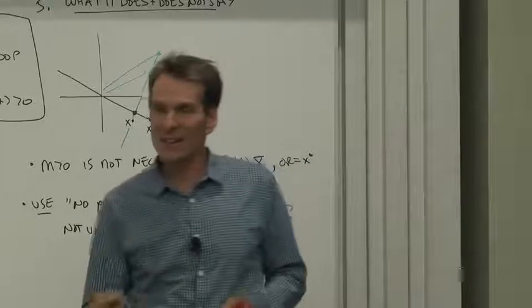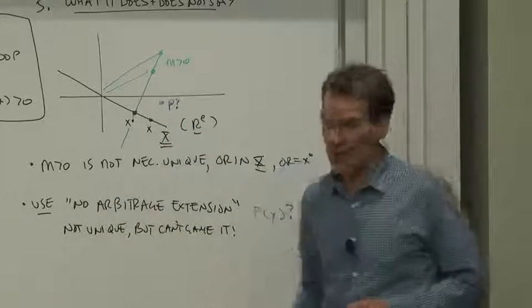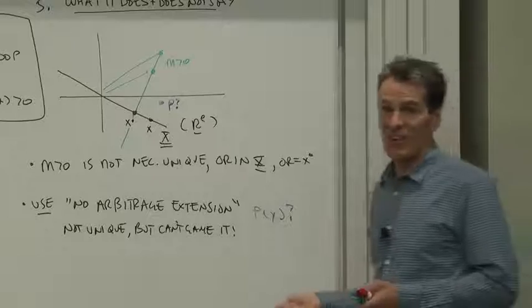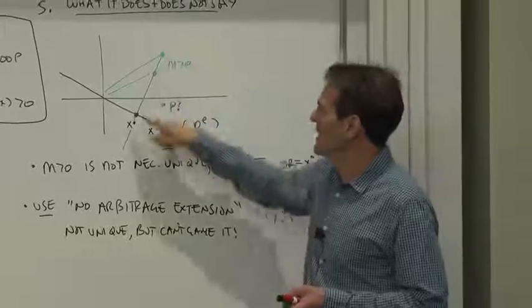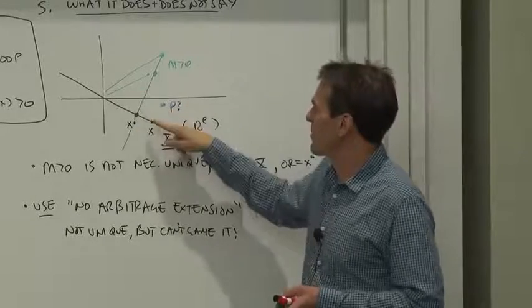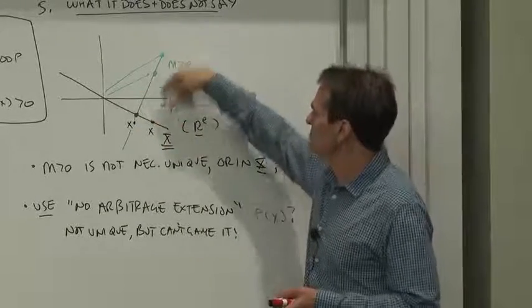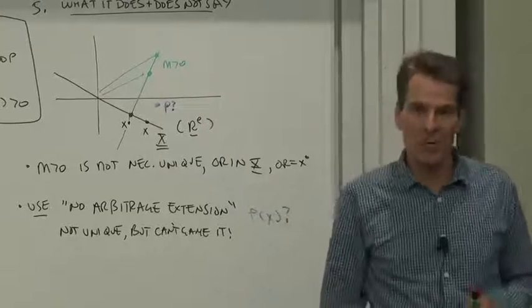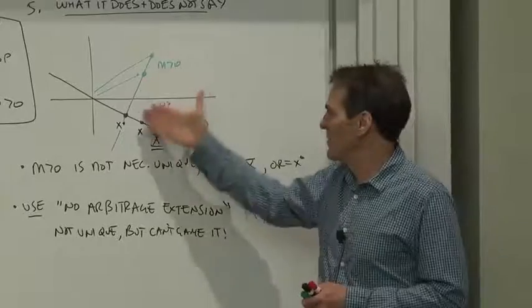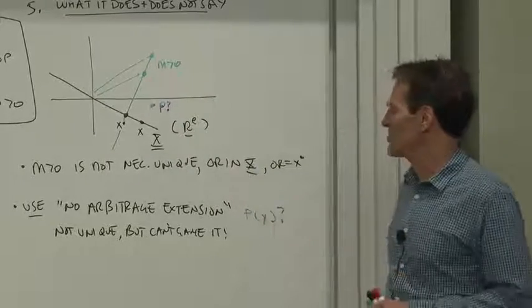Well, you don't really know what price to charge the client, but you don't want to quote a price that allows arbitrage opportunities because your clients are really smart and they'll game you if you do that. So if you choose one of these discount factors up here that's consistent with these prices, you know there's no way you can assign a price for that payoff that doesn't generate arbitrage opportunities and at least get something vaguely reasonable for what price you should charge the client.